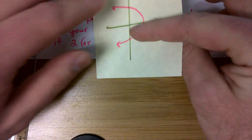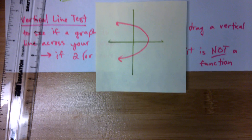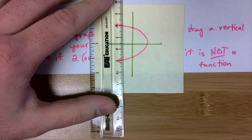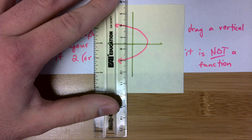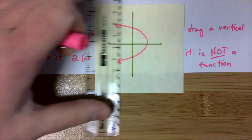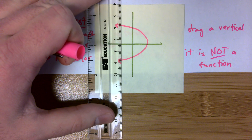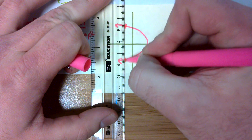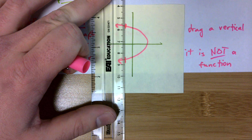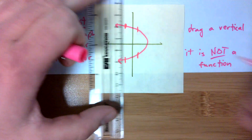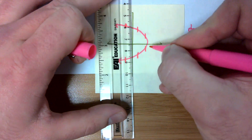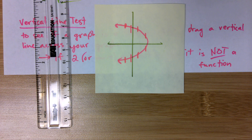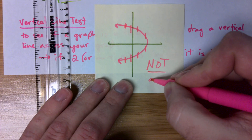But what if we have something like a C-shaped parabola? When we start on the left and drag that vertical line across our graph, everywhere we go we see two points. See how these two points line up vertically? So do these two. We can find an infinite number of points that all have the same input with a different output. That shows us this is not a function.